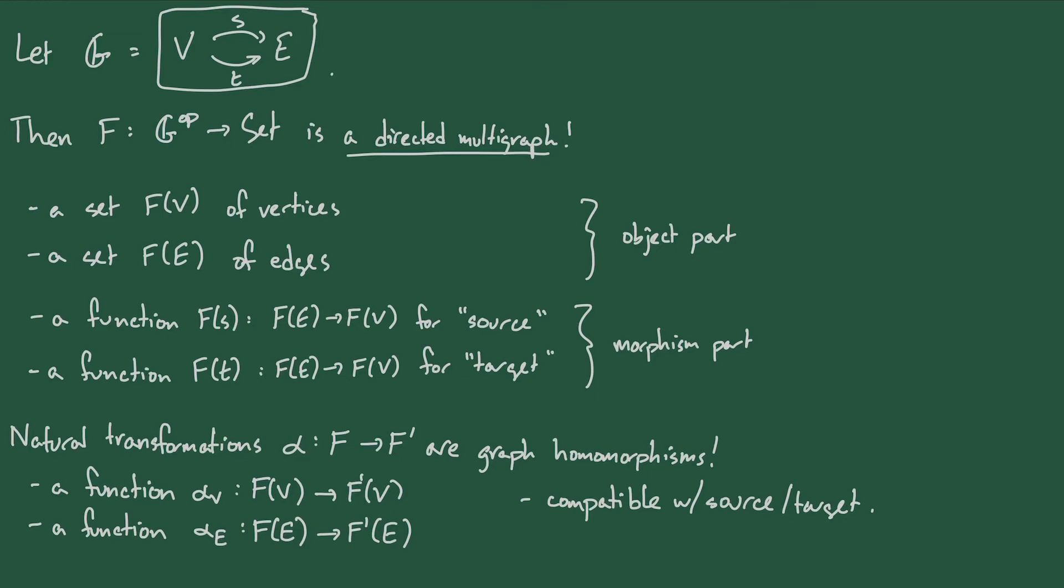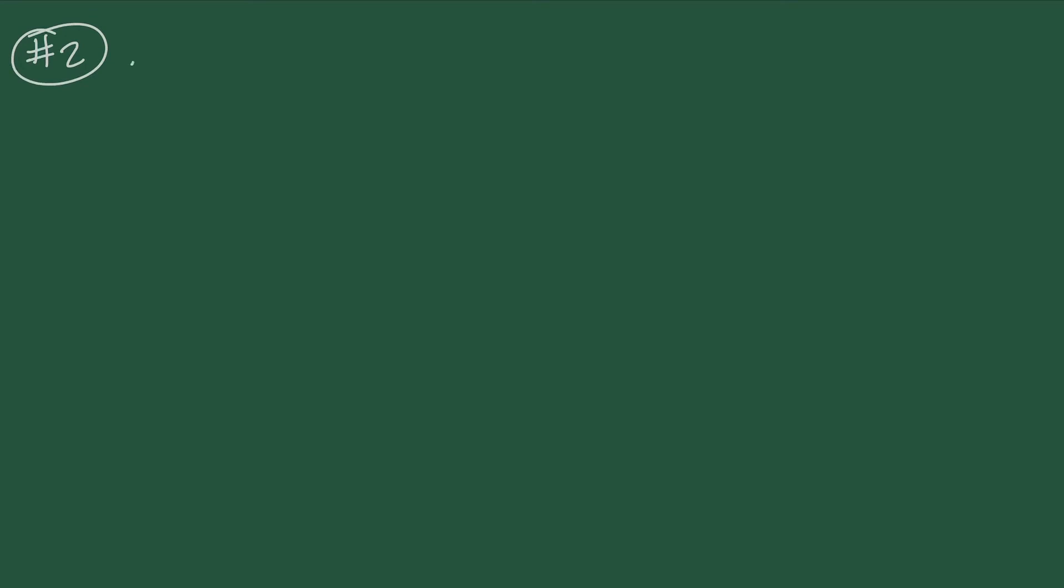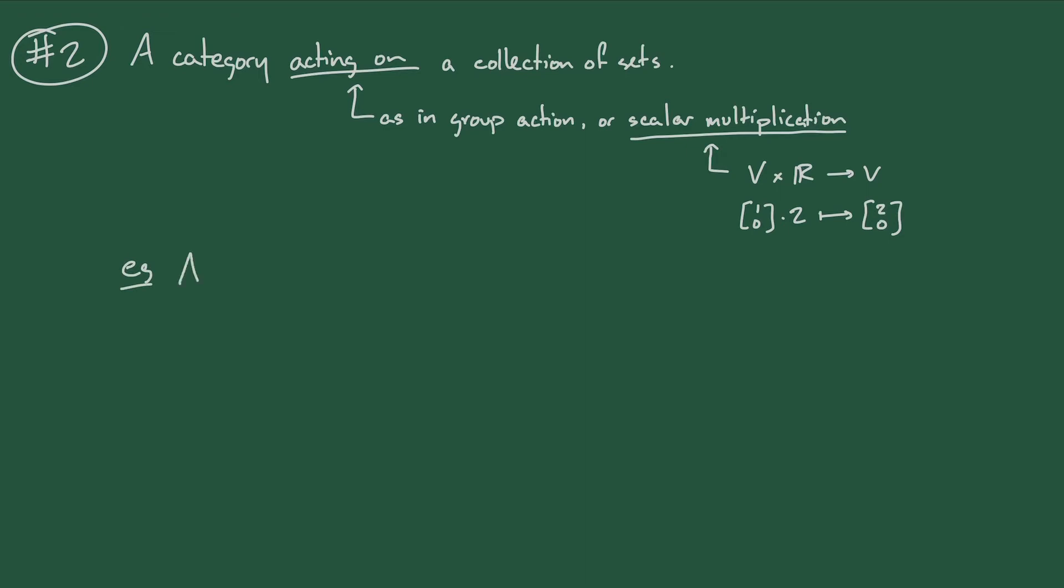Now, a second perspective, maybe a more sophisticated perspective, is that a presheaf is a category acting on a collection of sets. And when I say acting, I mean as in the sense of a group action, if you know what that is, or if you don't, then you can maybe think of scalar multiplication in a vector space. So one of the operations of a real vector space, for example, is that you can take any vector, any element of the vector space, and you can multiply it by a real number, and you'll get, again, a vector. This operation scales the vector. This is known as an action of R on V.